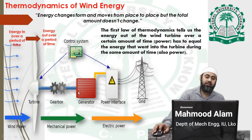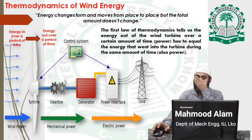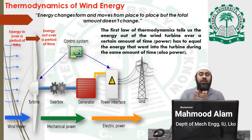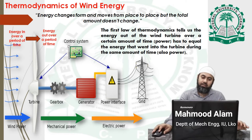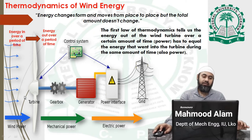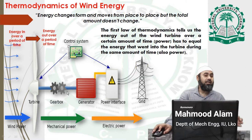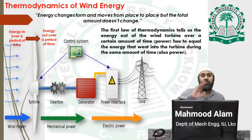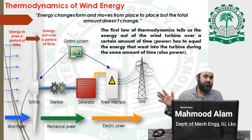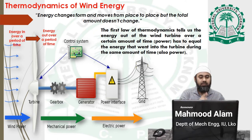A generator or alternator is placed with its shaft connected to the wind turbine shaft. A gearbox is used to transfer power from one shaft to another when they are placed close together. So the wind power is converted into mechanical power, and this mechanical power is now available at the inlet of the generator. The armature of the generator rotates, cuts the flux, and produces electricity — a mechanism we studied in basic physics classes.